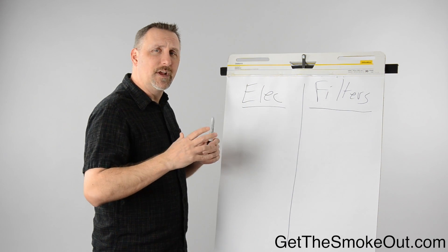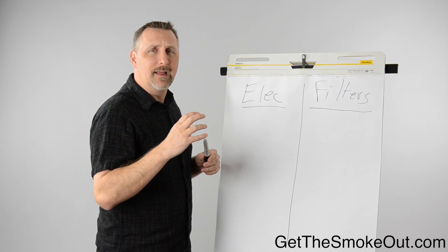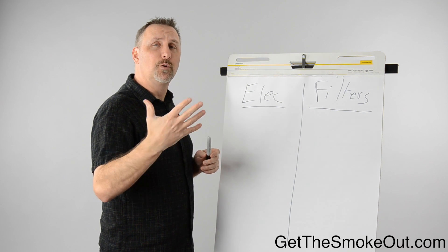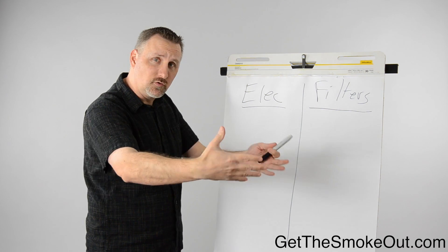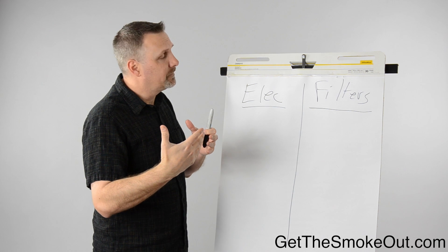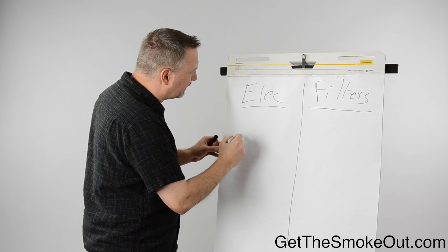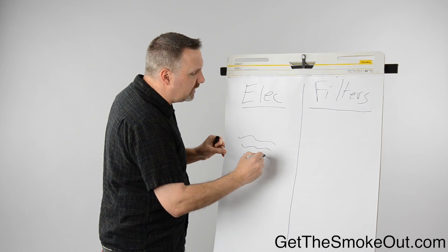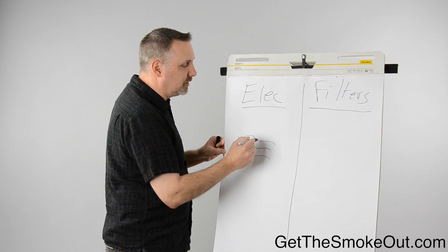Electronic smoke eaters utilize ionizing wires to supercharge the smoke particles as they get drawn into the system by the fan. And then they have these collection cells where the smoke particles are attracted to and captured.